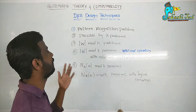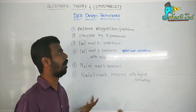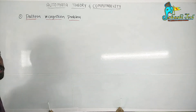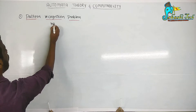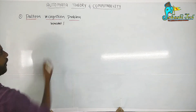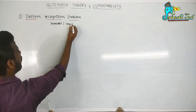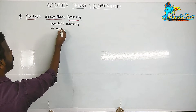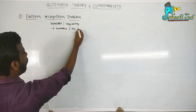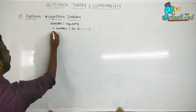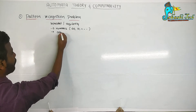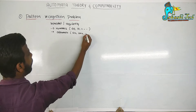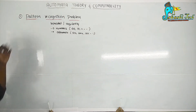Let us study one by one. First is the pattern recognition technique. What is pattern recognition? Let us understand. A pattern is generally a repeated thing or regularity. This repeated element may be numbers, like 0, 0, 1, 0, 1, 1, and so on. It may be alphabets, like ab, aab, acc, and so on. In general, we can say it is a repetition.